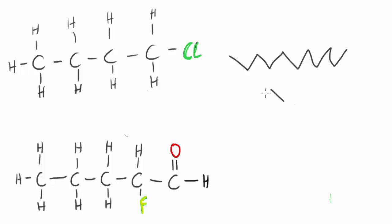We don't draw the hydrogens, but we know it's a hydrocarbon. We know that carbon forms four bonds pretty much all of the time. Since in this simple case each carbon is only bonded to another carbon, we can deduce that each of these carbons is going to be bonded to three hydrogens. And if you remember from before, this is ethane.